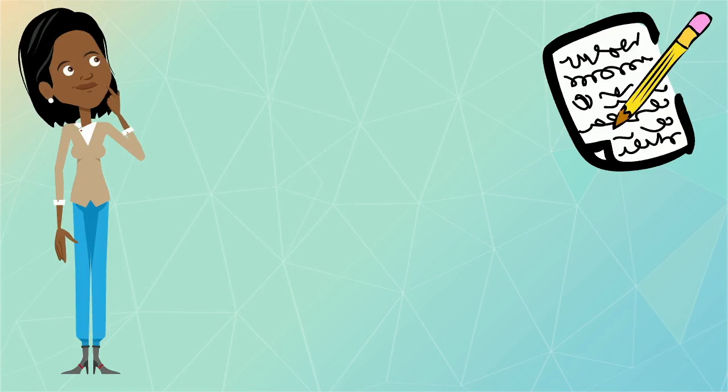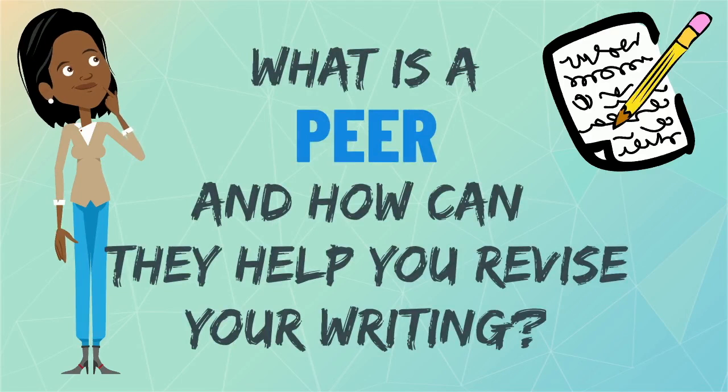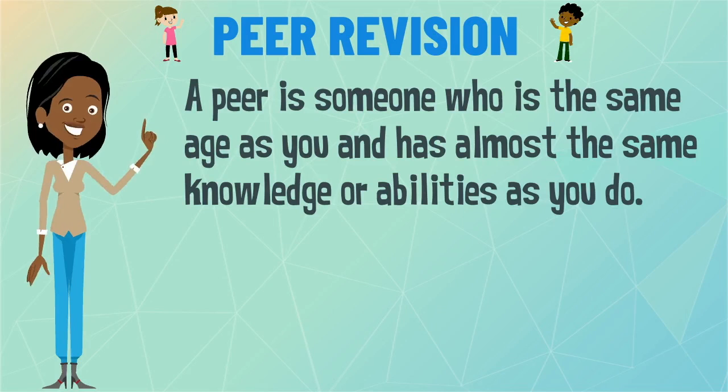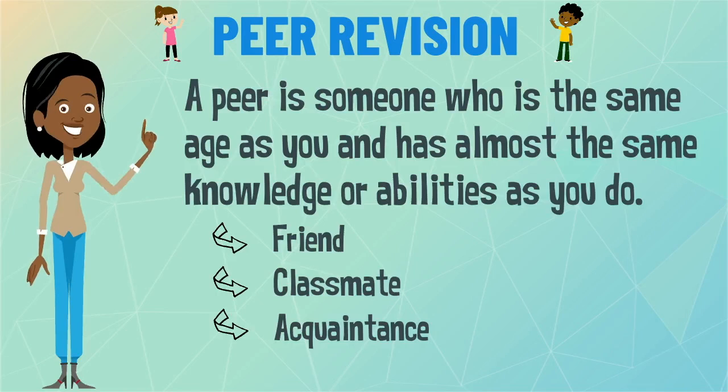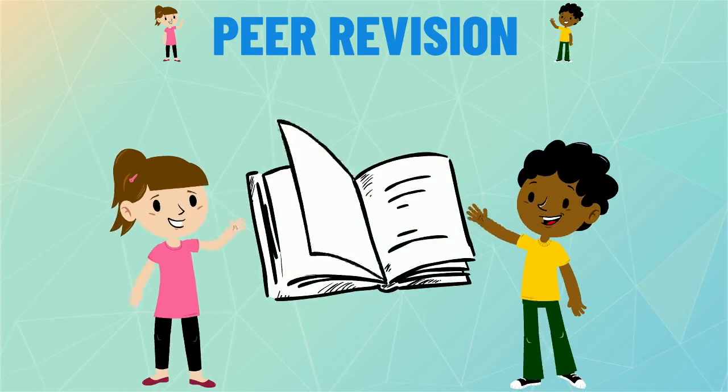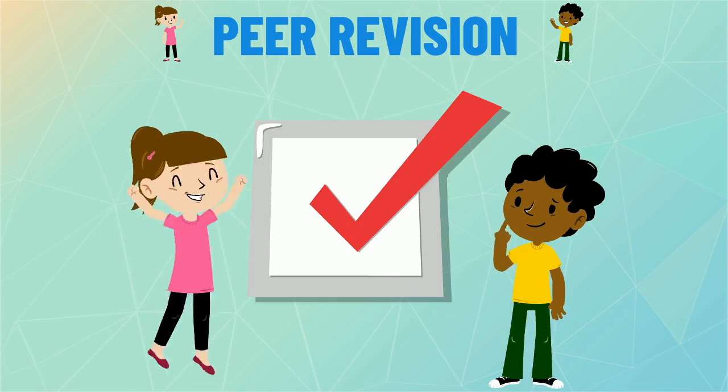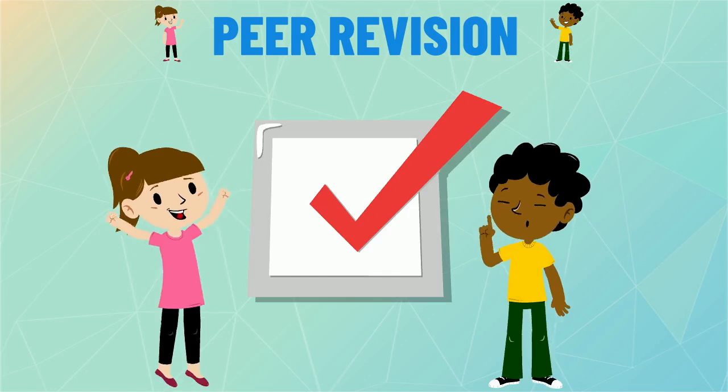A peer is someone who is the same age as you and has almost the same knowledge or abilities as you do. This can be a friend, classmate, or an acquaintance. You can ask a peer to read your story to see if it makes sense. They can use a peer checklist to see if your story is missing any important parts. That way, you can revise your story to add anything you might have missed to make your story complete.